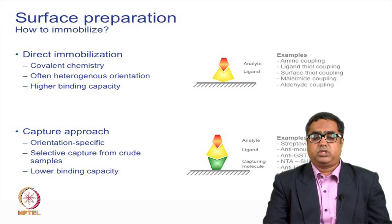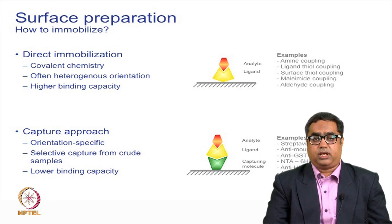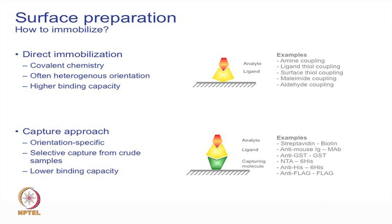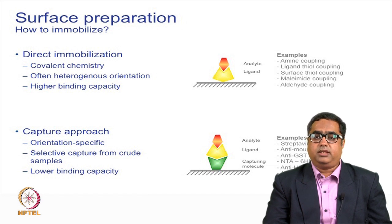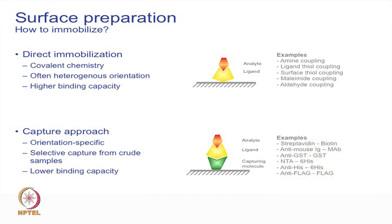When we look at the capture process, most molecules are expressed these days with tags, and there are different chips which will capture those tags. For example, a streptavidin chip captures biotin-tagged molecules like proteins, peptides, DNA, and RNA. Anti-mouse and anti-human capture kits are also available to capture mouse and human antigens or antibodies. Anti-his antibodies bind to his-tagged proteins, NTA chips capture histidine-tagged molecules, and anti-flag antibodies capture flag-tagged molecules.